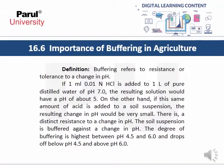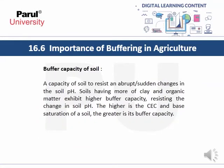The degree of buffering is highest between pH 4.5 and 6.8, and drops below pH 4.5 and above pH 6.8. Buffer capacity of soil is the capacity of soil to resist abrupt or sudden changes in soil pH. Soils having more clay and organic matter exhibit higher buffer capacity, resisting changes in soil pH. The higher the CEC and base saturation of a soil, the greater its buffer capacity.